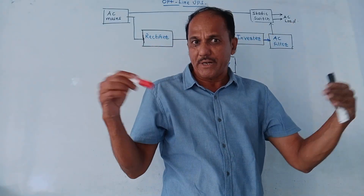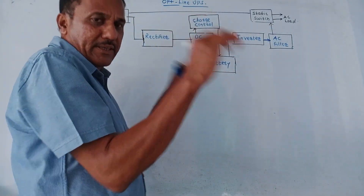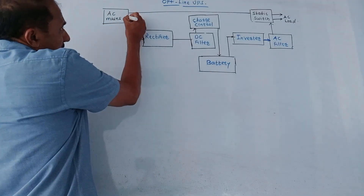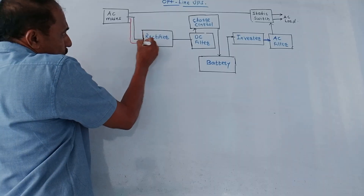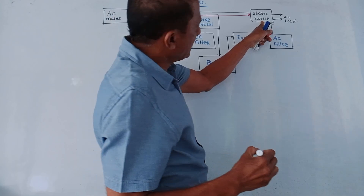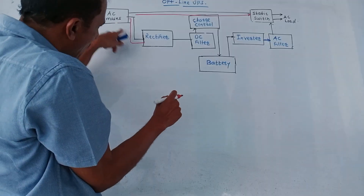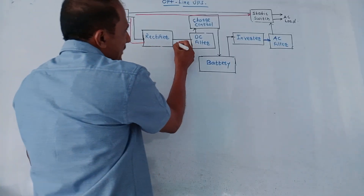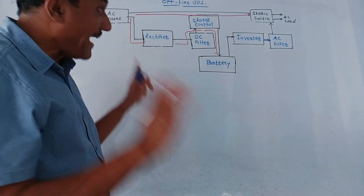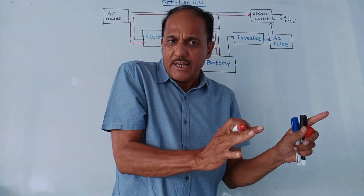The AC load is operated directly by AC mains under normal circumstances whenever there is continuous input power. At the same time, this power from AC mains is also applied to the rectifier — this is the normal operation. The power directly goes to the static switch and then to the AC load. Under normal circumstances, the same AC input is applied to the rectifier, then to the DC filter, then to the charge control unit, to charge the battery. But unlike online UPS, the inverter is not connected.